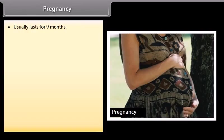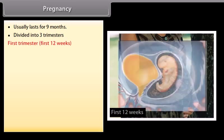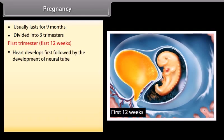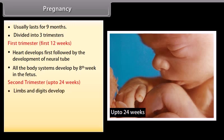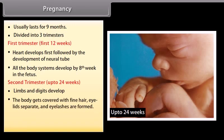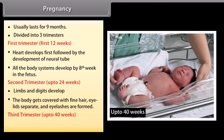Pregnancy usually lasts for nine months and is divided into three trimesters. During the first trimester, the first 12 weeks, the heart develops first followed by development of the neural tube, and all body systems develop by the eighth week. During the second trimester, up to 24 weeks, limbs and digits develop, the body gets covered with fine hair, eyelids separate, and eyelashes are formed. During the third trimester, up to 40 weeks, the full-term fetus develops and is ready for delivery.